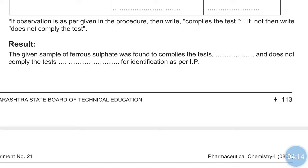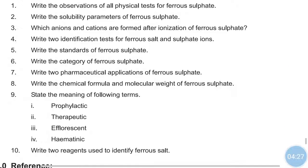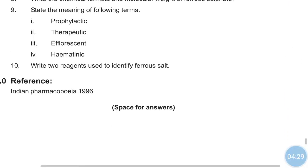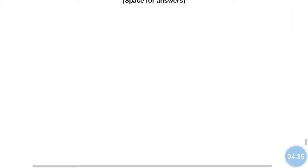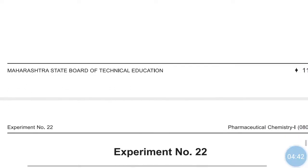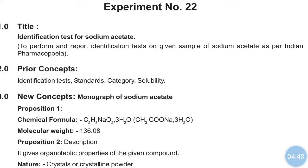If the test complies, write 'complies'; if it does not comply, write 'does not comply with the test.' The category of ferrous sulfate as a hematonic is important, and the meaning of prophylactic and therapeutic doses is also very important. After that, the next compound for the identification test is sodium acetate.